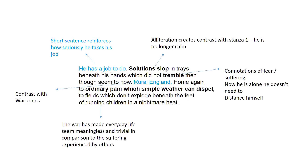The last two lines — 'fields which don't explode beneath the feet of running children in a nightmare heat' — have another rhyming couplet with 'feet' and 'heat'. This is a reference to a famous photograph taken by a war photographer showing children running away from an attack. It's an interesting background detail worth noting, though not essential.